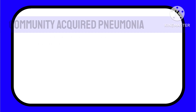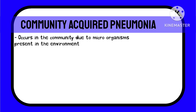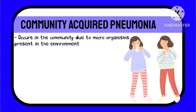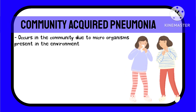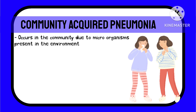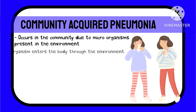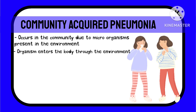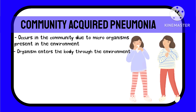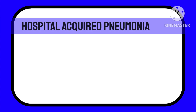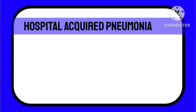Community acquired pneumonia occurs in the community due to the microorganisms present in the air or locality. It basically means that the organism entered your body from the environment and caused pneumonia.